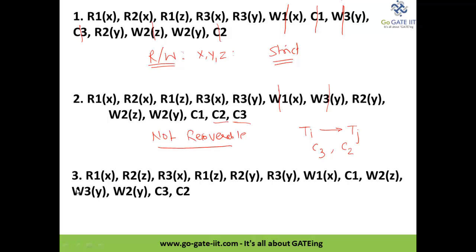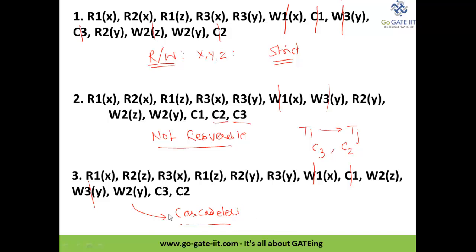The next problem: determine if it is strict, recoverable, or cascadeless. The first update is W1x and the next is C1, so this portion is strict. Then W2z has no references. Next, W3y: transaction T3 performs an update on y, and the immediate next instruction is W2y. Between the first update W3y and completion C3, there is a write operation but no read operation. This overwrite is possible in cascadeless schedule, so we call this a cascadeless schedule.